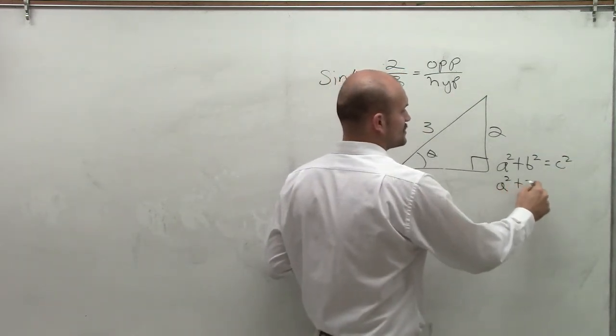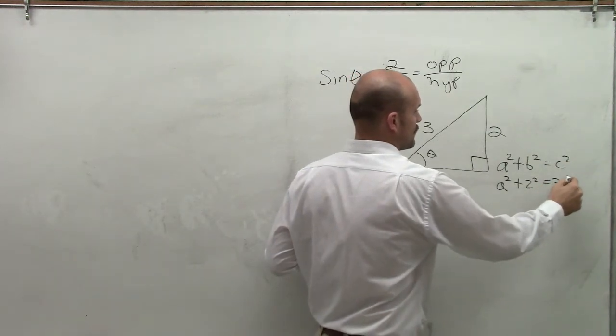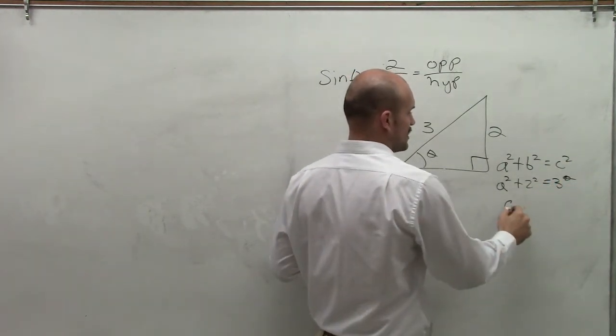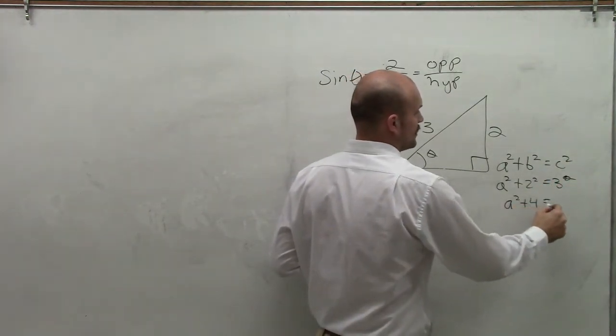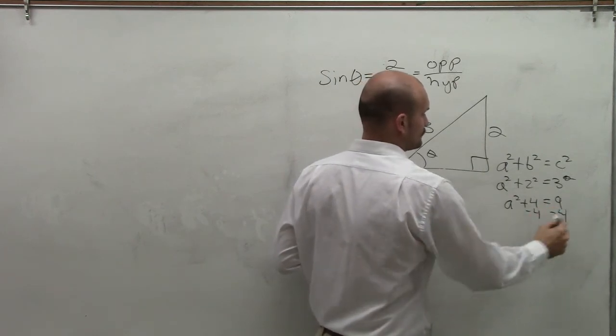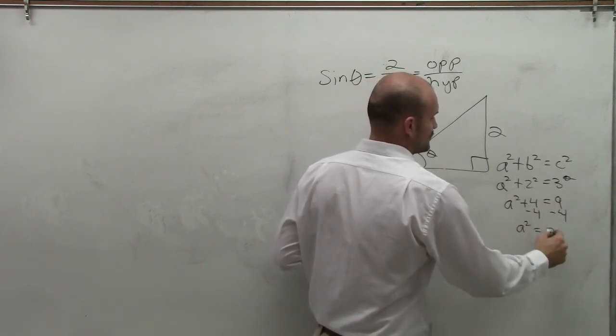So in this case, I have a squared plus 2 squared equals 3 squared. So I have a squared plus 4 equals 9 minus 4. a squared equals 5.